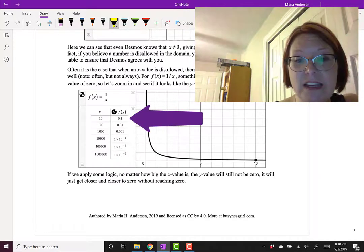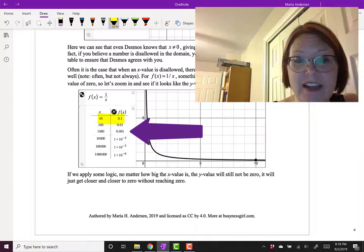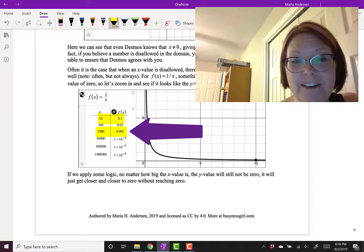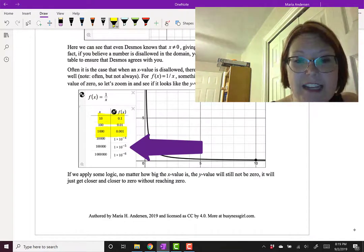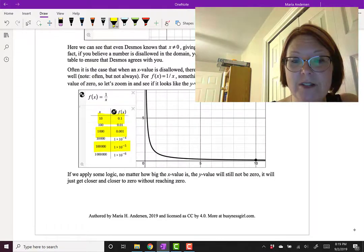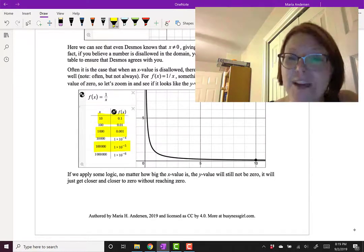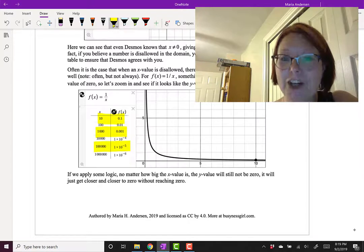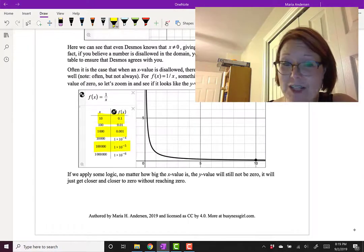For example, at x = 10, the y value is 0.1. At x = 1000, the y value is 0.001. At x = 100,000, the y value is 0.00001, or 1 × 10^-5. If you think about it, we're just doing 1 over bigger and bigger numbers, and that's not going to be zero. It's just going to be a smaller and smaller fraction. No matter how big the x value is, the y value isn't going to be zero. It just gets closer and closer without reaching zero.